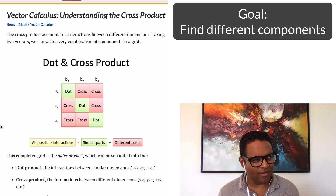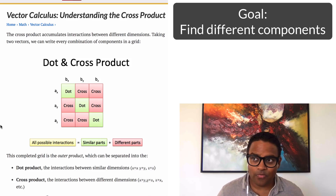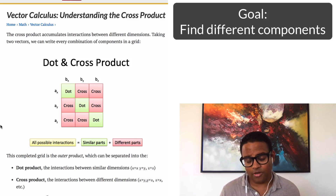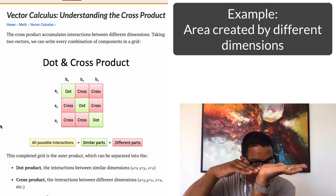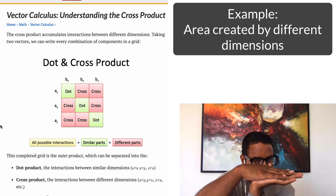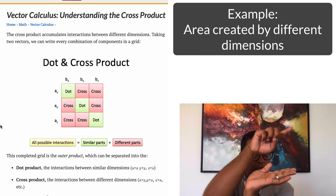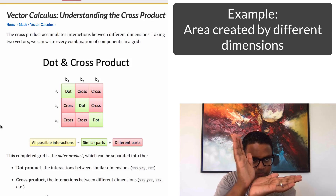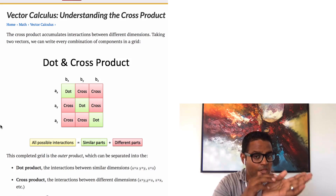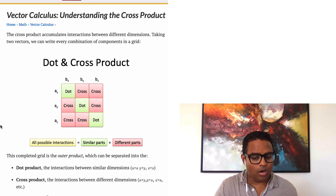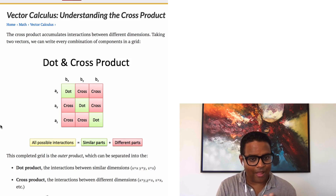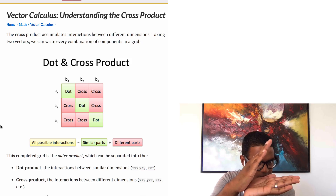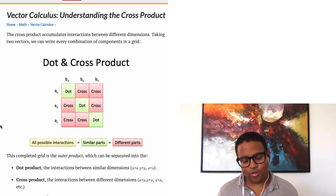You might ask: why do I care about what's not in common? Well, you're trying to find a difference, and a lot of things in the real world are based on differences, not similarities. For example, area: if I have two parallel lines on the same plane, there's no area between them because they're on top of each other. But if they point in different directions, now I have a box or square being made. From three dimensions, three vectors make a cube. So area and volume are made by things going in different directions. As they get more in common, the area shrinks. That's one use case.